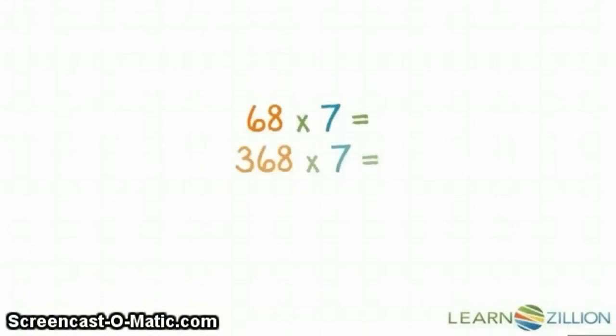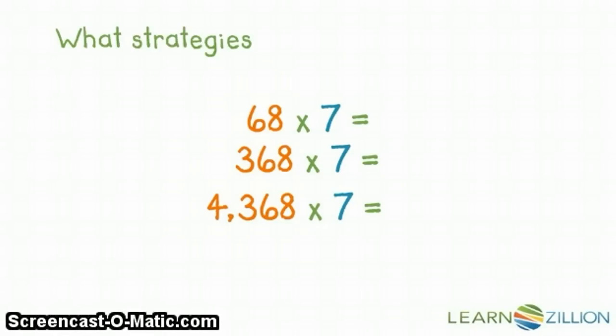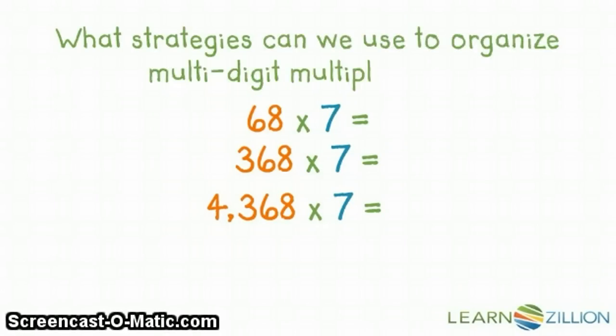While multiplying larger numbers involves more steps, it's not necessarily more challenging if you know the steps to organize the process. So, what strategies can we use to organize multi-digit multiplication?